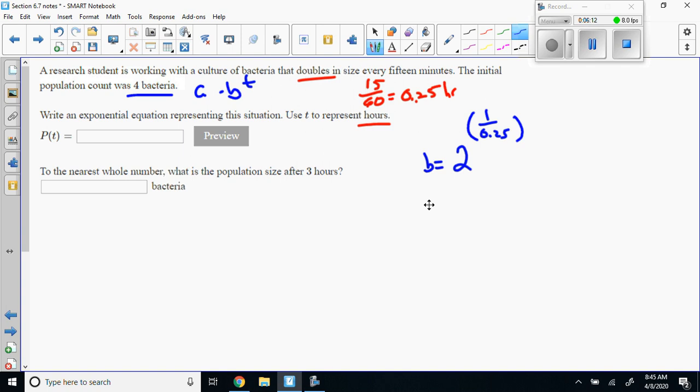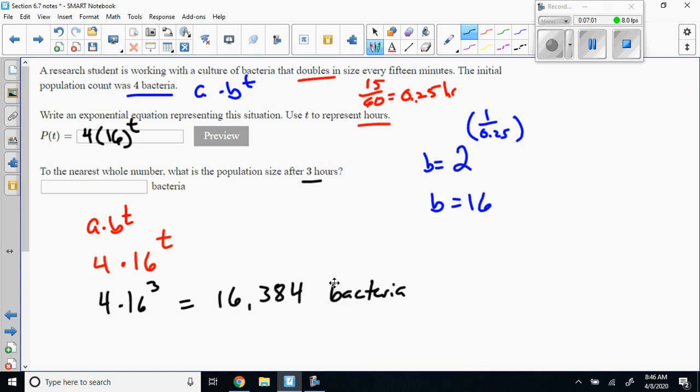This is how we're going to get our new base because every 15 minutes it's going to double. We get our base to be 16. Our equation is a times b raised to the t, which is 4 times 16 raised to the t. If we plug in 3 hours, we have 4 times 16 raised to the 3.